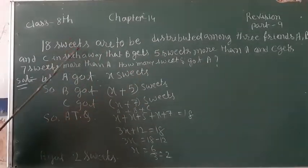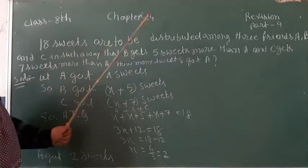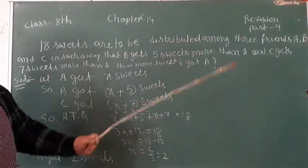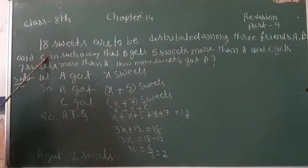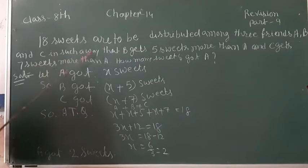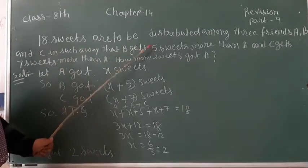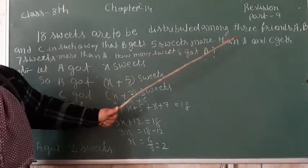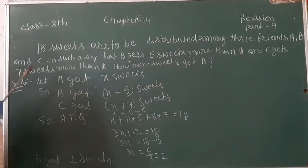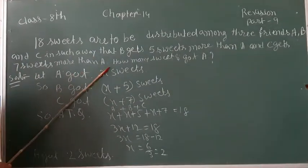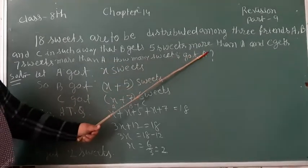See, 18 sweets are to be distributed among 3 friends A, B and C in such a way that B gets 5 sweets more than A and C gets 7 sweets more than A. How many sweets got A?